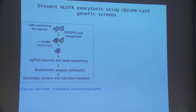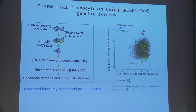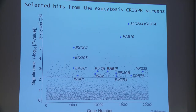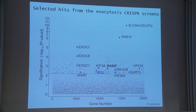We performed secondary screens and individual validations, screening in multiple cell lines — starting with proof-of-concept screens in cancer cell lines, but eventually focusing on myoblasts and pre-adipocytes. Our screen identified a large number of single-guided RNAs significantly enriched compared to the control population. While the screens identified many genes, the majority of hits were not previously linked to GLUT4 exocytosis, but we did recover known regulators such as RAB10, exocyst, and almost the entire insulin signaling cascade.